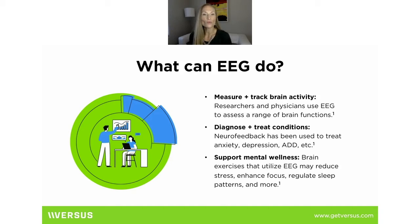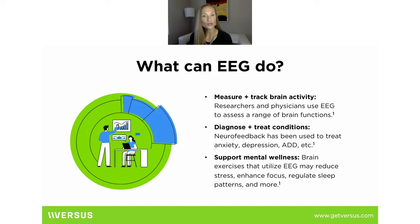We've looked at how those electrical patterns correlate to external experiences or behavioral correlates. So we want to answer the question: we know our brain makes electricity — why does that matter? What can EEG do for you and your clients? EEG is used to measure and track brain activity, looking at the correlation between different EEG patterns and particular symptom experiences, mental states, or emotional states.